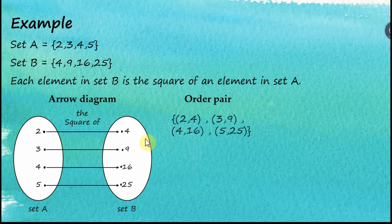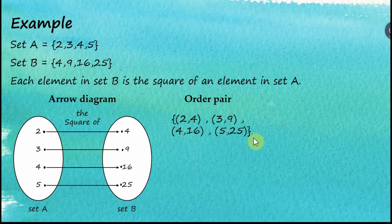For ordered pairs, we use curly brackets containing four pairs of numbers: (2, 4), (3, 9), (4, 16), and (5, 25), ending with curly brackets. This is how we express relations in ordered pair form.